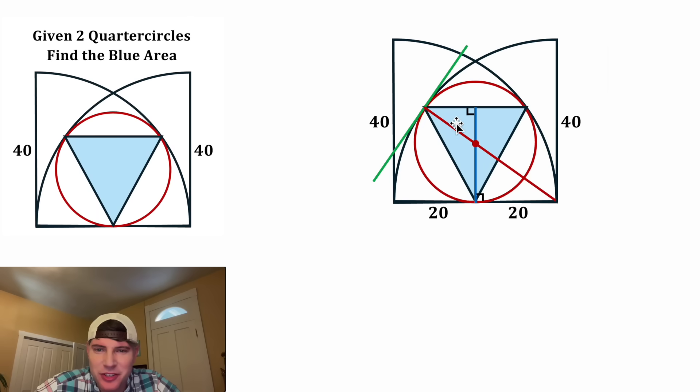And now since this is the center of the circle, this is a radius of the circle. Let's call it R. And this right here will also be a radius of a circle. Let's call it R.